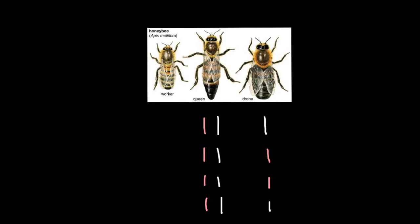This drone would be a son of this queen and would develop from unfertilized eggs. So a drone doesn't have a father, and drones also don't have sons, but drones may have daughters — I will explain that later. As you see, this set can be random.